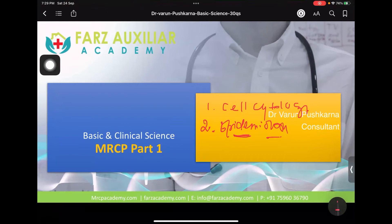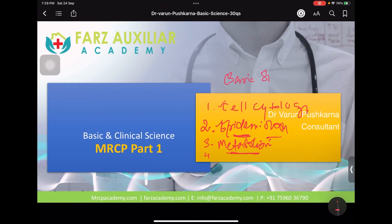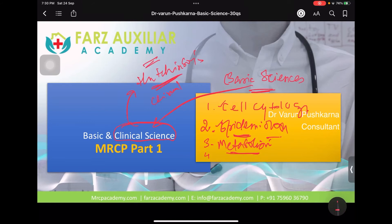So second is epidemiology, first is cell cytology. Third is metabolism, and you have to read about it in basic sciences. In clinical sciences — all that we used to read in Hutchinson — we have to understand the clinical aspect of disease. People ignore it because it is boring, laborious, and volatile. But that doesn't mean it won't come in the exam. Twenty questions would come from basic sciences and clinical sciences, so a lot is at stake.